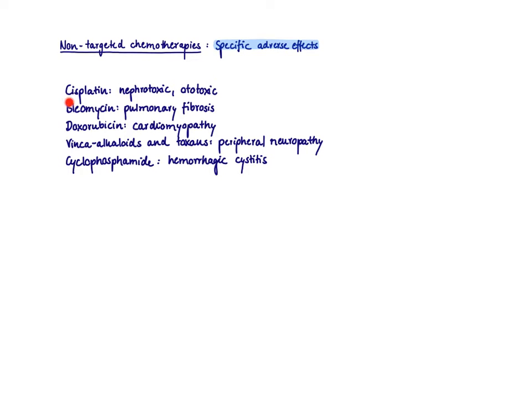First, we have cisplatin. Cisplatin is a platinum drug that acts as a non-cell cycle-specific agent and is extensively cleared through the kidney. So it's very toxic within the kidney, therefore nephrotoxicity and also ototoxicity.